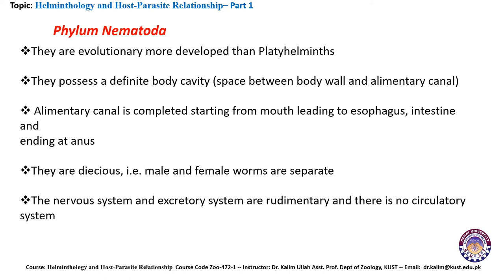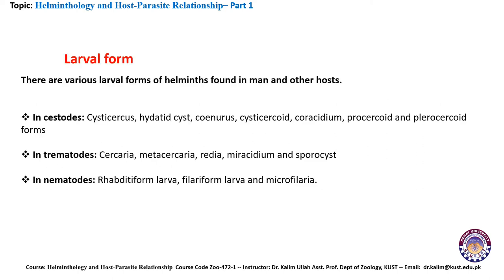The general characteristics of Phylum Nematoda: they are evolutionarily more developed than Platyhelminthes. They possess a definite body cavity — a space between the body wall and the alimentary canal. The alimentary canal is complete, starting from the mouth, leading through the esophagus and intestine, and ending at the anus. They are dioecious, meaning male and female worms are separate. Their nervous system and excretory system are rudimentary, and there is no circulatory system in Phylum Nematoda.